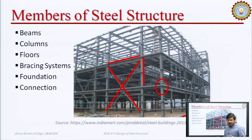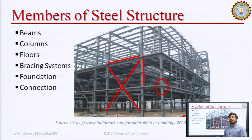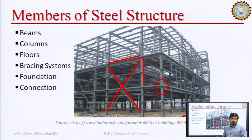By looking at all these things, we can understand that to construct any structure we need to go through the design of beams or flexure members, columns or compression members, bracing systems under tension and compression, and connections. By having elementary knowledge of the design principles of these components, we can proceed to the further design of the steel structure. Keeping this in mind, our syllabus has been designed accordingly.